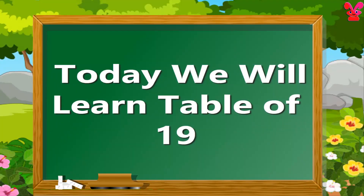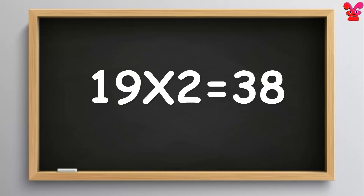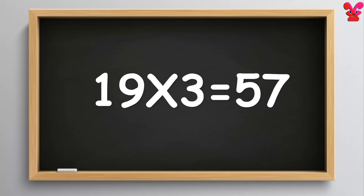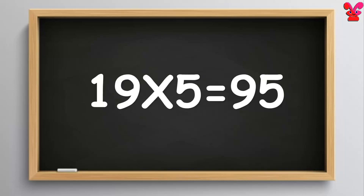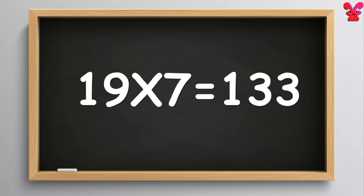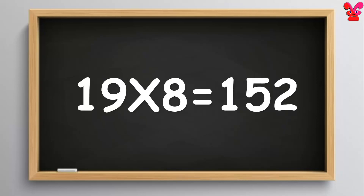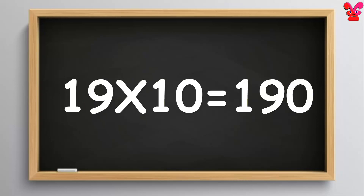Welcome to KittyTube Channel! Today we will learn the table of 19. 19 ones are 19, 19 twos are 38, 19 threes are 57, 19 fours are 76, 19 fives are 95, 19 sixes are 114, 19 sevens are 133, 19 eights are 152, 19 nines are 171, 19 tens are 190.